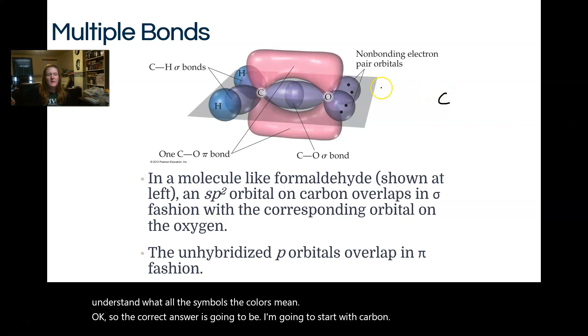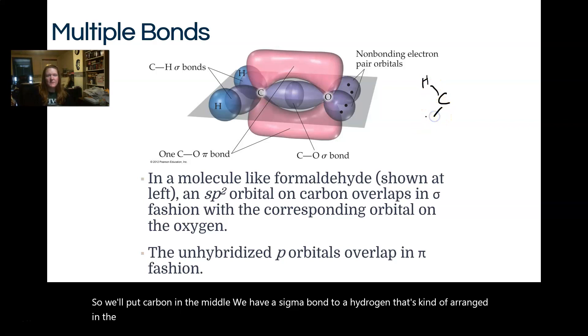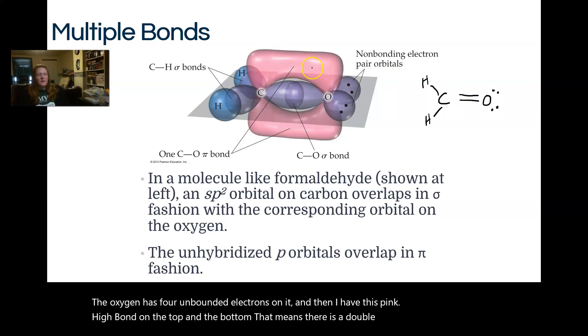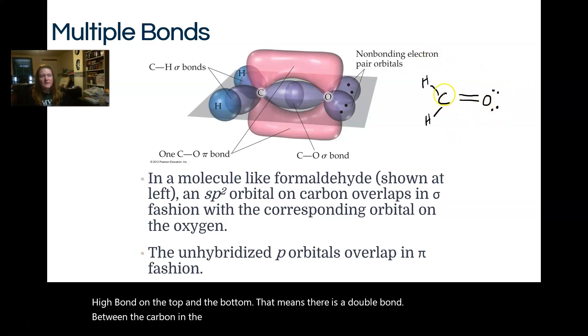We'll put carbon in the middle. We have a sigma bond to a hydrogen that's arranged in the back and a sigma bond to this hydrogen, so those will be single bonds. Then I have a sigma bond to an oxygen. The oxygen has four unbonded electrons on it, and then I have this pink pi bond on the top and the bottom. That means there's a double bond between the carbon and the oxygen, which will also complete the octet for both carbon and oxygen.